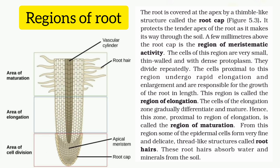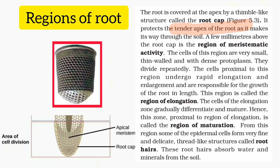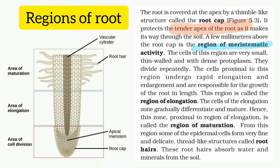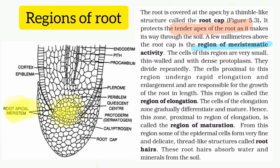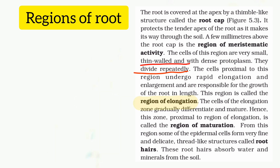The root tip is covered by the meristematic zone. The meristematic zone is a region of a few millimetres with unique characteristics: thin-walled small cells, dense protoplasm, and rapid cell division.